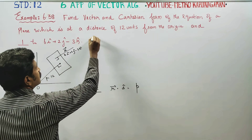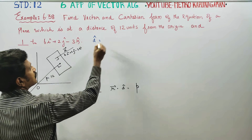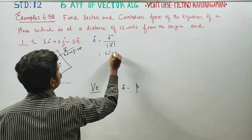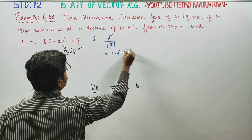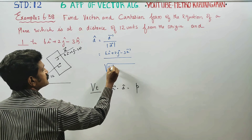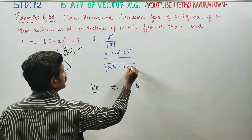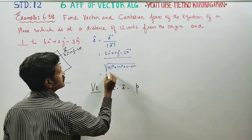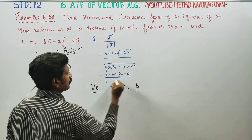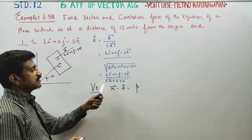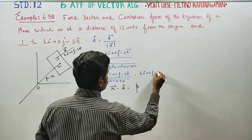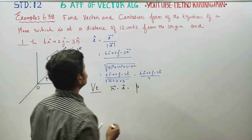D-cap is the d-vector divided by its magnitude. So d-cap equals 6i + 2j - 3k divided by the square root of 6² + 2² + 3², which gives 6i + 2j - 3k over the square root of 36 + 4 + 9, that is 49. Since √49 = 7, d-cap equals (6i + 2j - 3k) / 7.